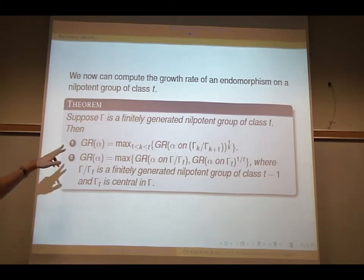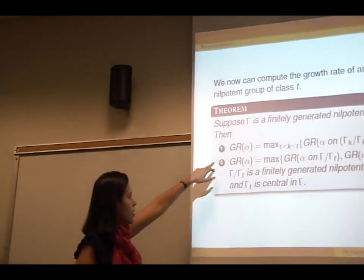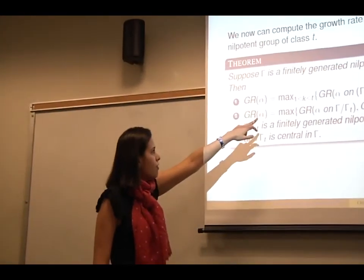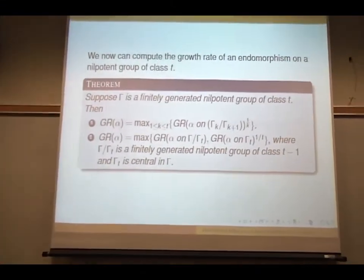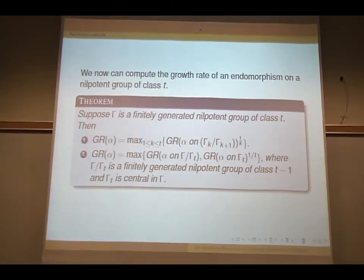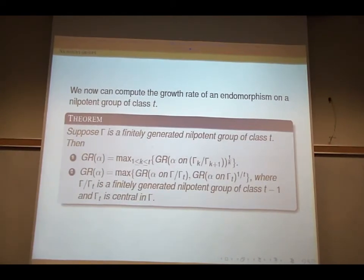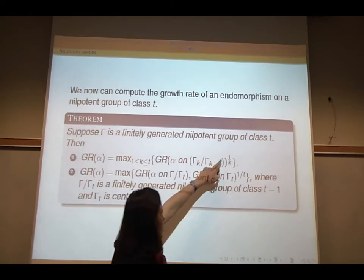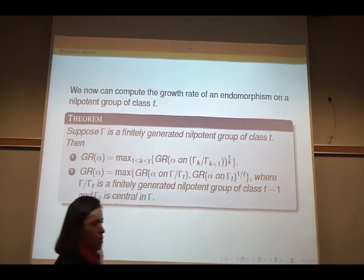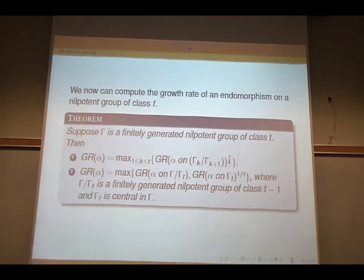Suppose gamma is a finite nilpotent group of class T. Then the growth rate of alpha is the maximum over k of the growth rate of alpha on the quotient gamma_k mod gamma_{k+1}, to the power 1/k. This is very important, and we have examples showing that you actually do need that power, otherwise it's not going to work.